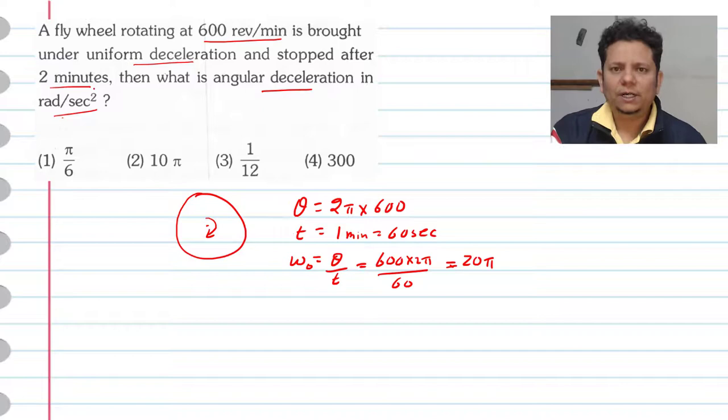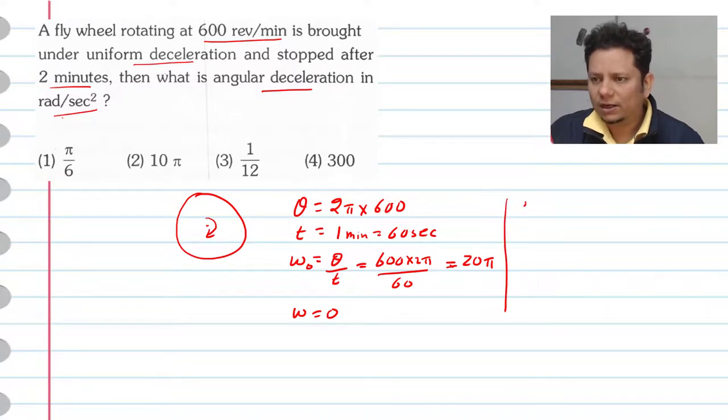Now 2 minutes after this it stops, which means that omega final is 0. So alpha will be equal to, first equation of motion, final omega minus initial omega divided by time taken. So final omega is 0.